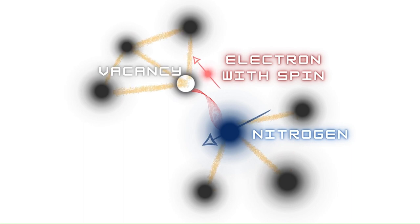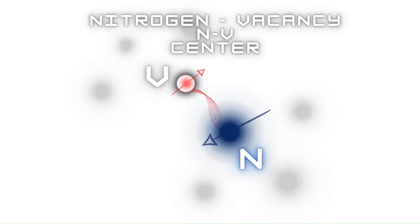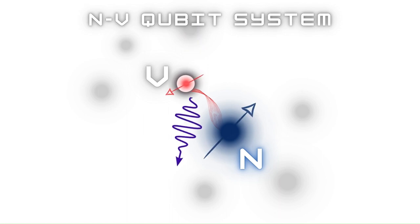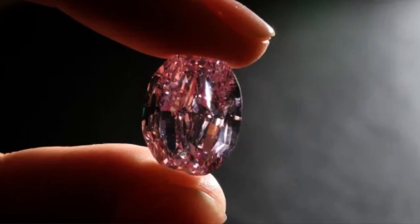The electrons trapped in the vacancy form an NV center which absorbs light at certain wavelengths and has useful optical and spin properties. That's why the nitrogen vacancy centers in diamond are also referred to as color centers. Actually these specific point defects give a pink color to diamond.